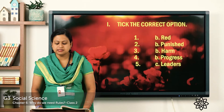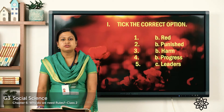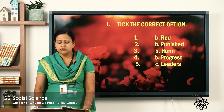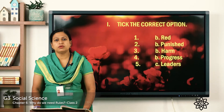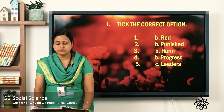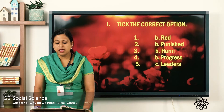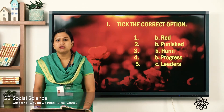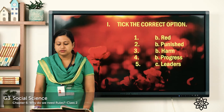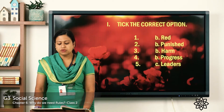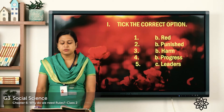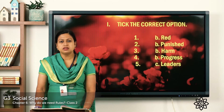Now let's move to the second exercise: write true or false. First, we share work to fight with one another. Second, raising our hand to say something in class is a rule. Third, a law is a rule that everyone in a country must follow. Fourth, we should cross the road when the traffic light is red. Fifth, it is okay to throw garbage on the streets.